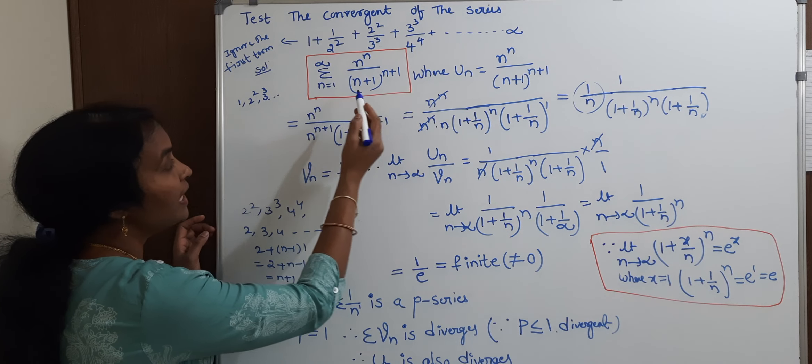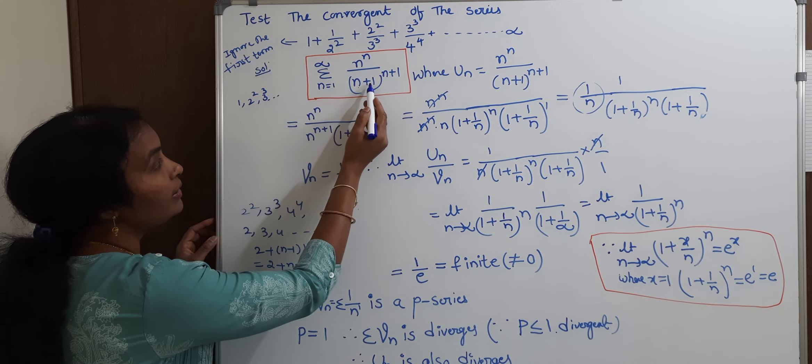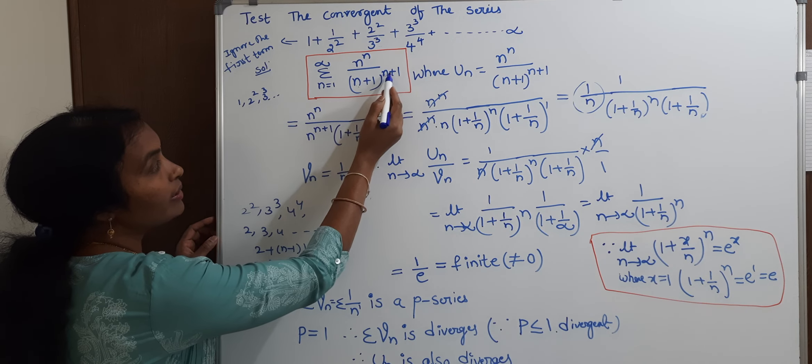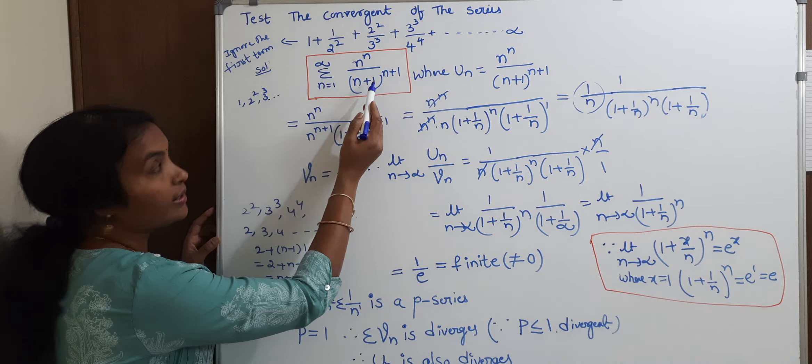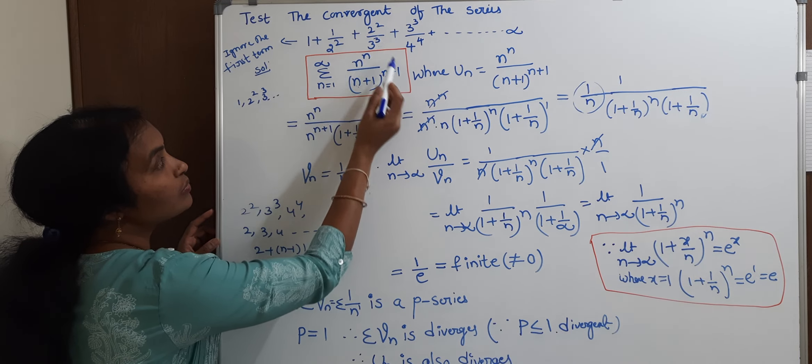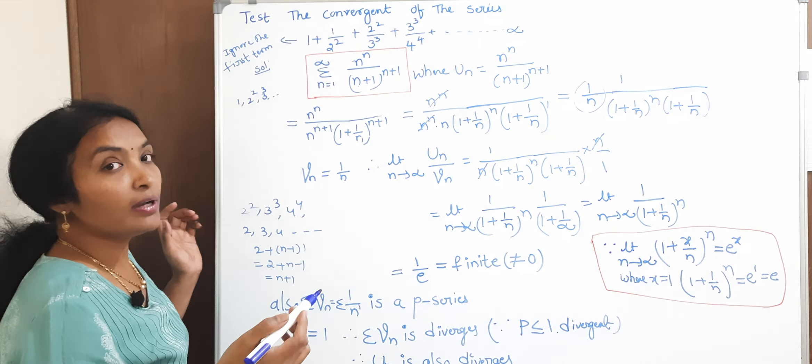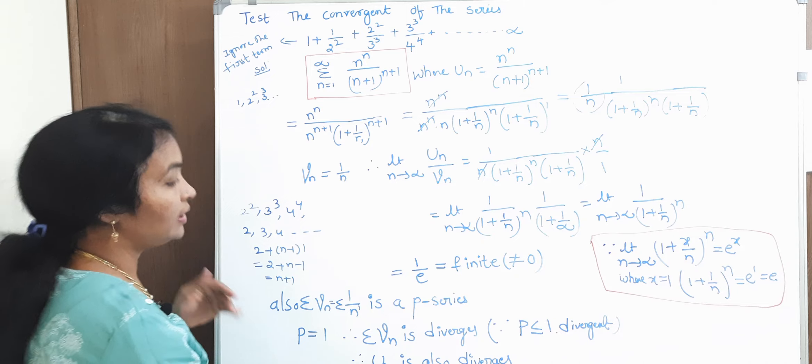And then we have to say the power is 2 plus N minus 1. So, this is N plus 1. But power is 1. If you take N equal to 1, 1 plus 1 is 2. Here we have to say 1 plus 1 is 2. So, this is N equal to 2. So, this is 2 plus 1 is 3. So, this is N plus 1 is 3. So, this is N plus 1. Is it clear?